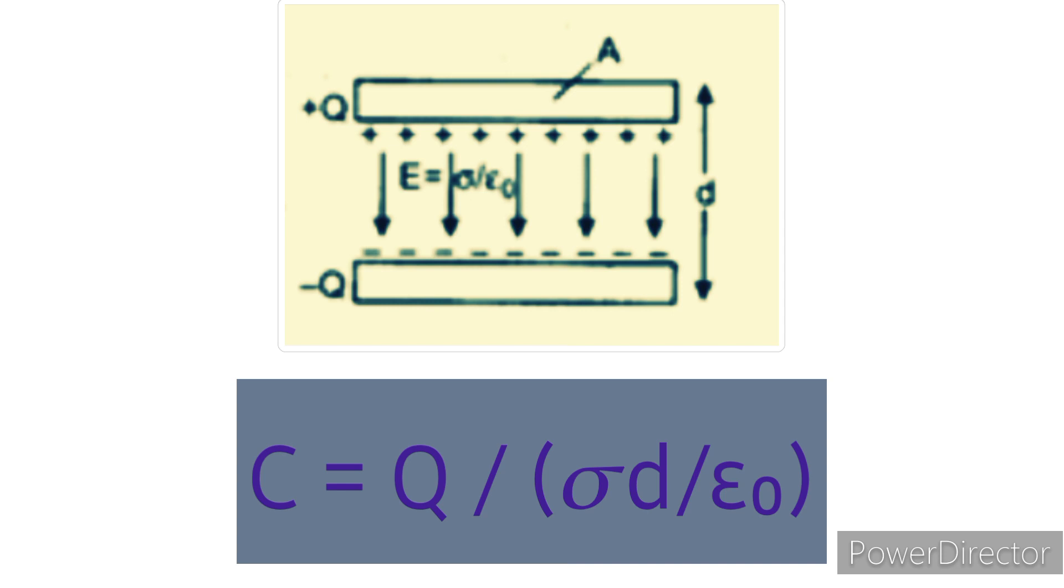Here sigma is called the surface charge density and its value is Q by A. Then Q gets canceled out. Finally, capacitance C equals epsilon naught A divided by D. This is the expression for the capacitance of parallel plate capacitor.